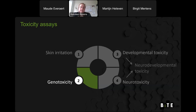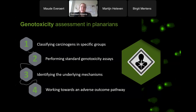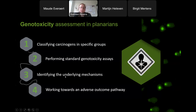The second assay allows us to assess genotoxicity using planarians. We follow a similar stepwise workflow — from the organismal to the molecular level. First we classify compounds into specific groups: non-carcinogens, non-genotoxic carcinogens, and genotoxic carcinogens. Then we confirm genotoxicity using standard genotoxicity assays such as the comet assay, which are also possible in planarians. As a third step, we investigate the underlying mechanisms to work towards an adverse outcome pathway.